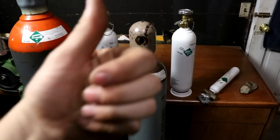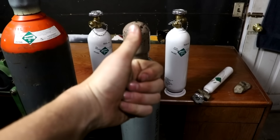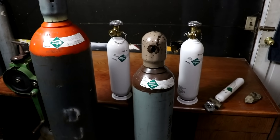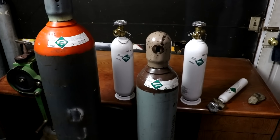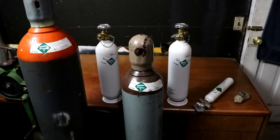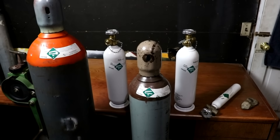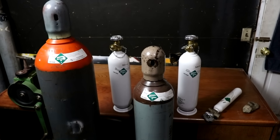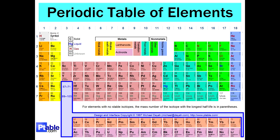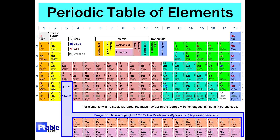All right everyone, welcome back to Cody's lab. In front of me I have samples of each of the noble gases. These are the least reactive of all the elements and they comprise the column on the far right of the periodic table.